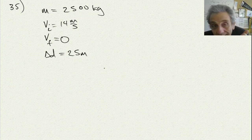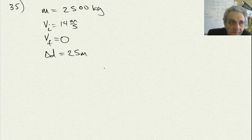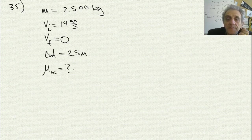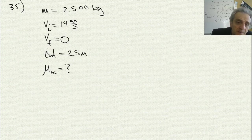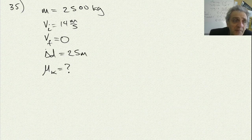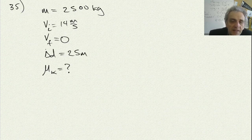The question asks what is the coefficient of kinetic friction. This problem involves both kinematics — given delta d, vi, and vf — and dynamics. The only way to get from dynamics to kinematics is through the bridge of acceleration. So we need to find the acceleration in the dynamics problem first. Let's start on the dynamics side and draw our free body diagram.